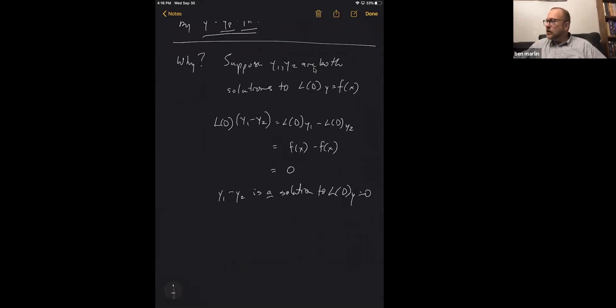So to be super general here and think about every possible y1 and every possible y2, then you're going to be able to start with any given solution and add just that general solution to the homogeneous equation. And that will be your general solution.